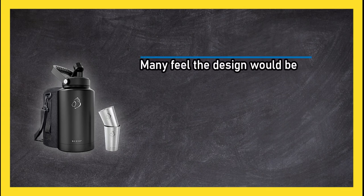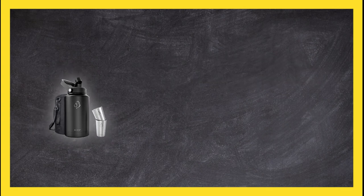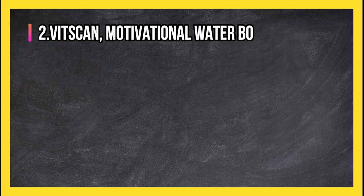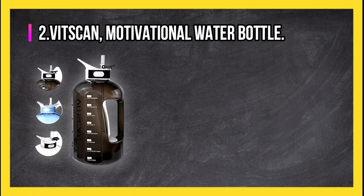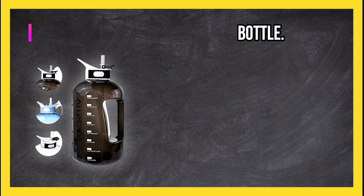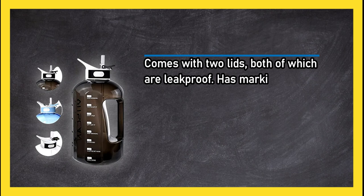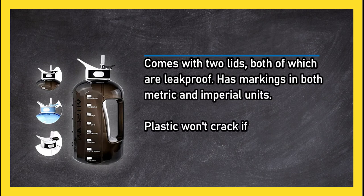At number two, Vites can motivational water bottle. Comes with two lids, both of which are leak proof. Has markings in both metric and Imperial units. Plastic won't crack if it's dropped or knocked over.